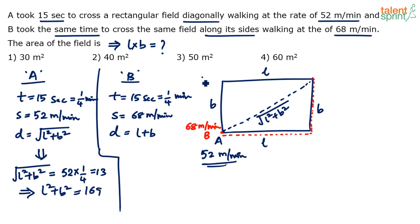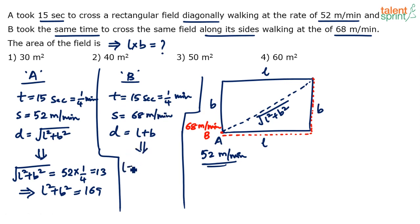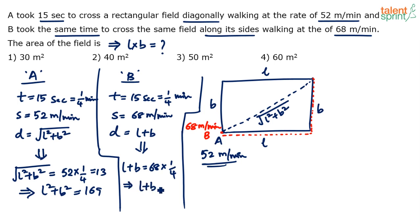Now do the same for person B. The distance covered by B is L + B. Distance equals speed times time: 68 × 1/4 = 17. So we get L + B = 17. That's Equation 2.